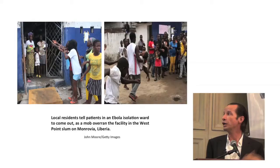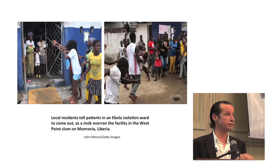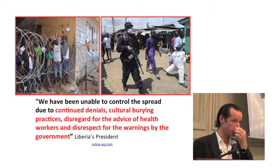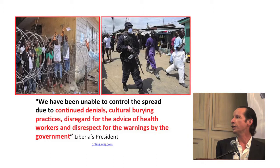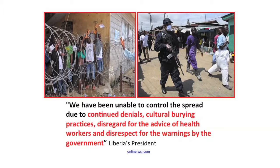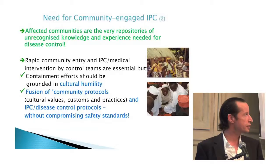We can see fear-driven responses in individuals, communities, and entire countries. One example: a mob taking over a containment center, telling people to leave — because the community's view is that family members were taken in and never came home. We've also seen whole communities quarantined, and then statements like: 'We've been unable to control the spread due to cultural burial practices, disregard for health workers' advice, and disrespect for government warnings.' We need to ask: is that factual, and how can we change it, rather than just blaming? These communities are repositories of unrecognized knowledge and experience that we need.